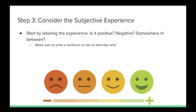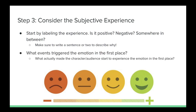Figure out how you would classify the experience, but don't stop there. Once again, write a sentence or two describing why you made your decision. What specifically makes this experience negative or positive, and to the degree that it is? Once you have your answer, start to think about what event or events actually triggered the emotion in the first place.